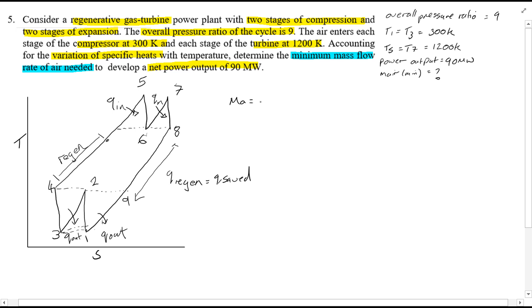Mass flow rate of air is equal to the power output divided by the network. Now of course this is then equal to power output divided by work out from the turbines minus work in from the compressors. This is what we'll be looking to solve since we know this, we want to find the work out from the turbine and the work in from the compressors.